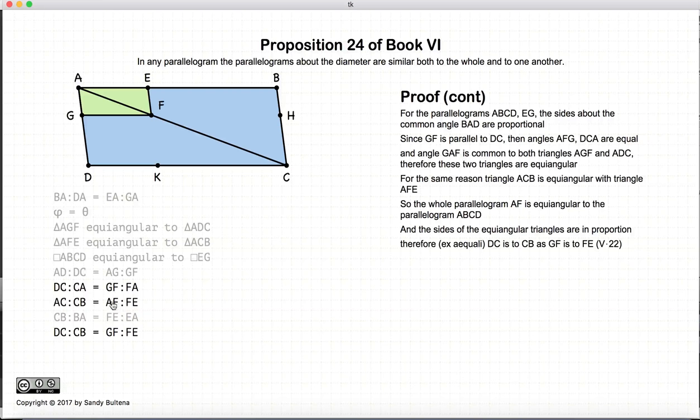If we look at just these two relationships, we have DC to CA is equal to GF to FA. Now CA is the same thing as AC, FA is the same thing as AF. So we're left with the ratio of DC to CB is equal to GF to FE. And that's Proposition 22 of Book 5. And thus we have the sides about the parallelograms are proportional. These four relationships are just showing that the sides about the parallelograms are proportional.